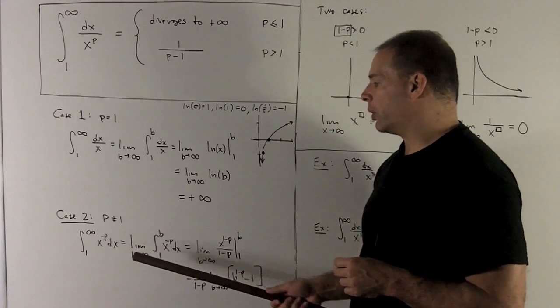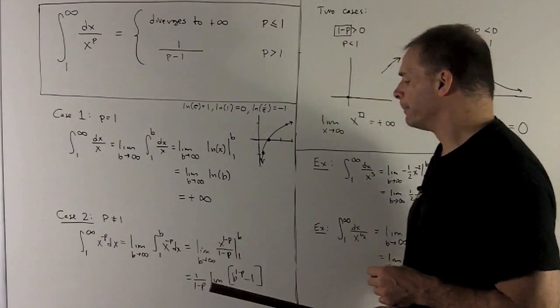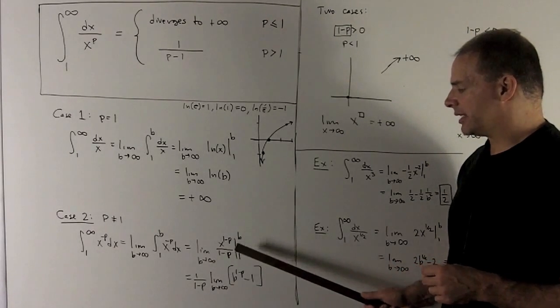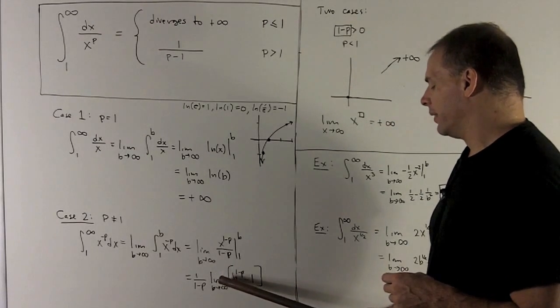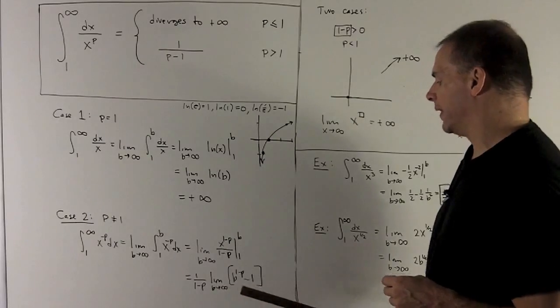We follow our nose. Limit of the definite integral from 1 to b of x to the minus p. We add 1, flip it over, put our values in, and then take the difference. And then we notice we're taking the limit of, essentially, b to the 1 minus p, as b goes to infinity.